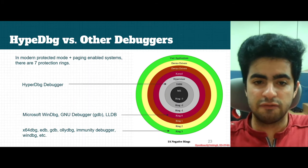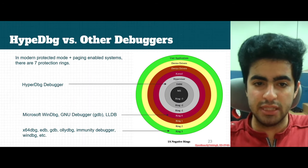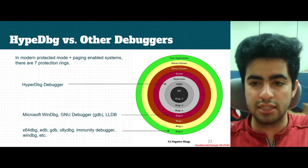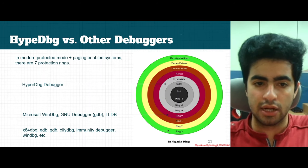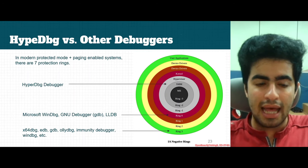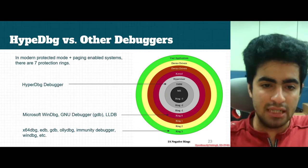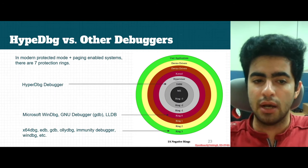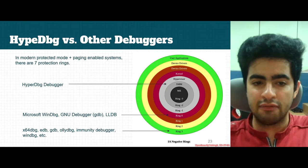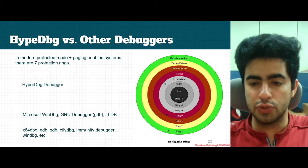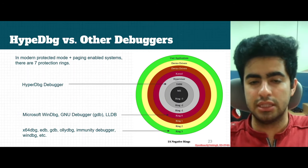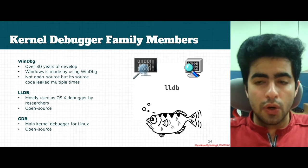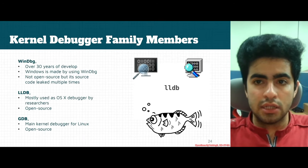Microsoft WinDBG, GDB, GNU Debugger, and LLDB all run on ring 0 like kernel-mode modules. x64dbg, EDB, OllyDBG, Immunity Debugger, and parts of WinDBG and GDB have modules that run in user mode. So HyperDBG is more privileged in terms of rings in Intel processors.